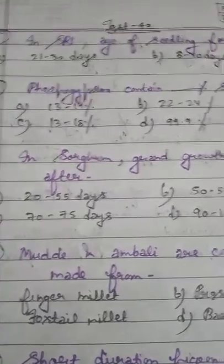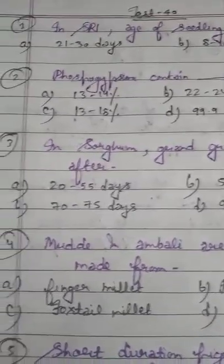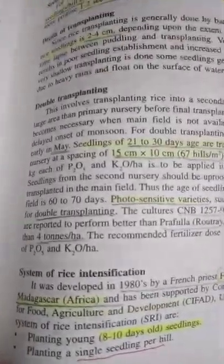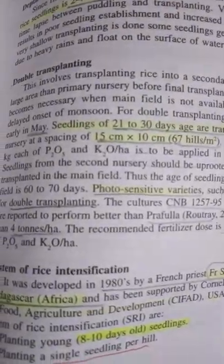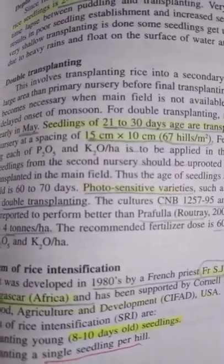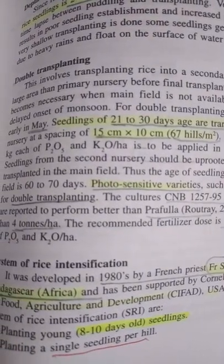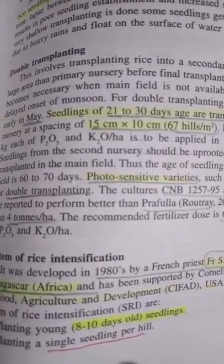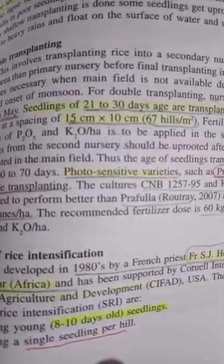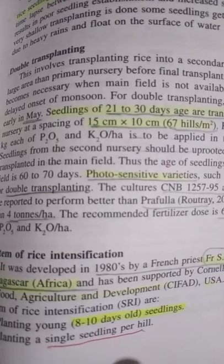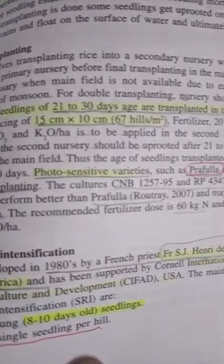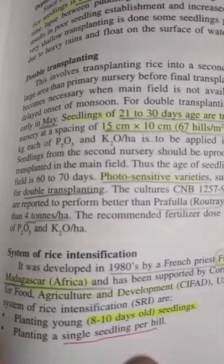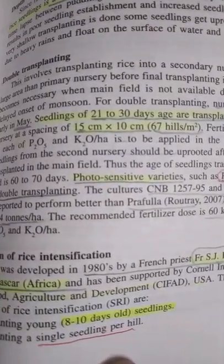Option A: 21 to 30 days. Option B: 8 to 10 days. Please remember — before SRI, you must also remember double transplanting. When the main field is not available or has been flooded due to monsoon rain, we do the planting in another field and then later transplant it to the main field. This is called double transplanting. In double transplanting, seedlings of 21 to 30 days old are transplanted in a secondary nursery and the spacing is 15 × 10 cm.